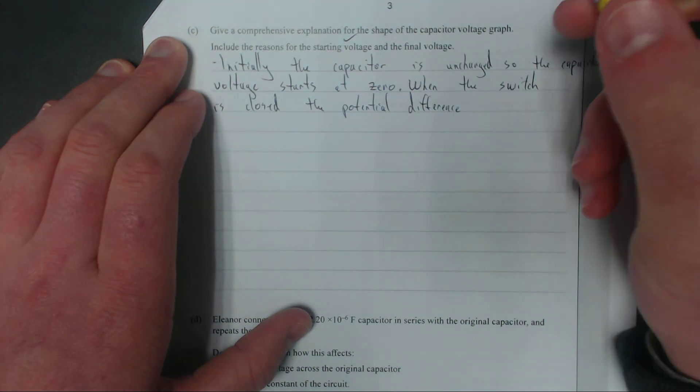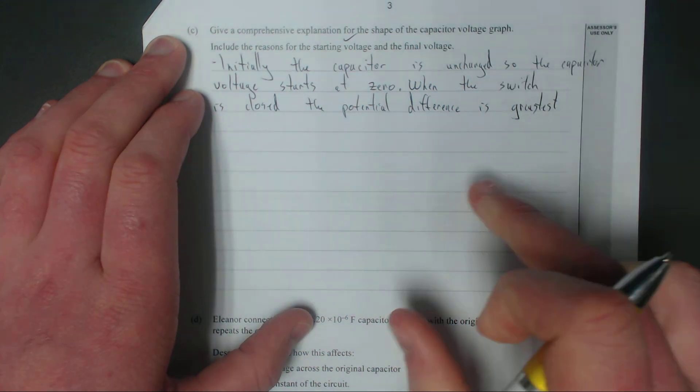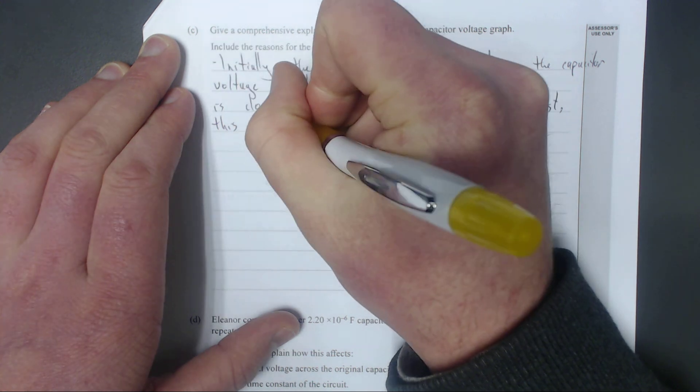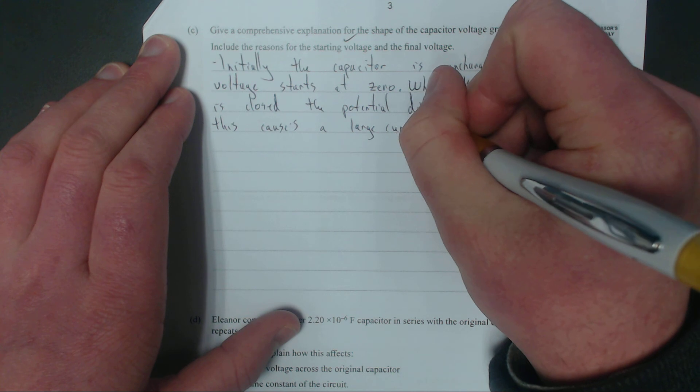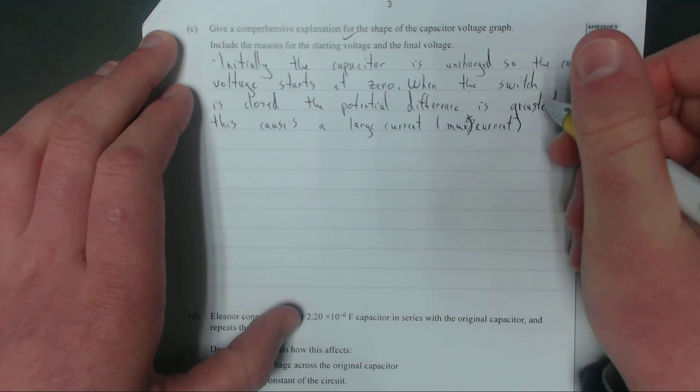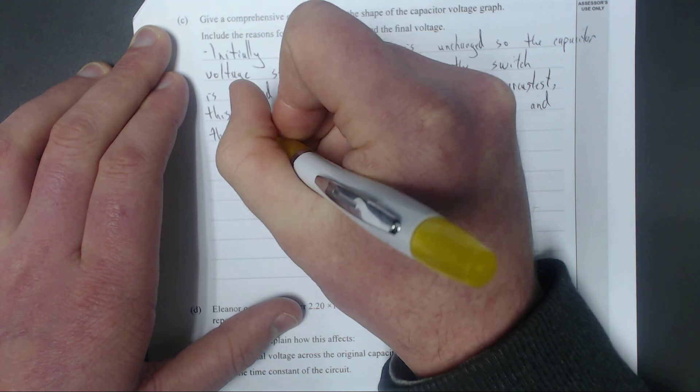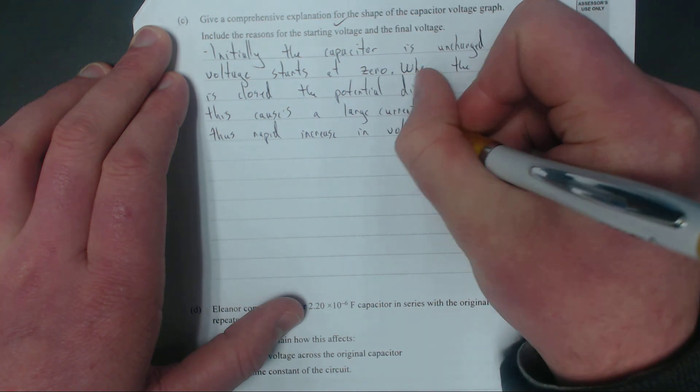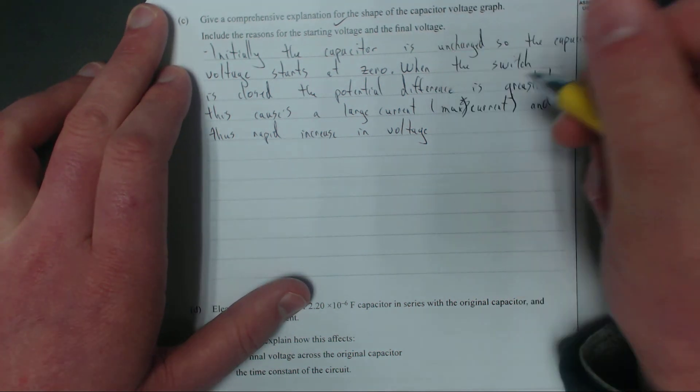Right, so I've said, when the switch is closed, the potential difference is greatest. There's a potential difference between the capacitor and the battery. This causes large current, max current, because really that is the maximum current. Max current, and thus rapid increase in voltage. So initially, you have a massive current, which means you've got a rapid increase in voltage, which you can see on the graph from the gradient being very, very steep.